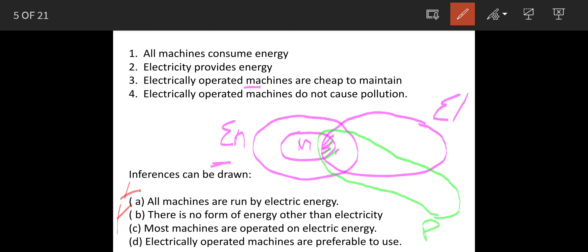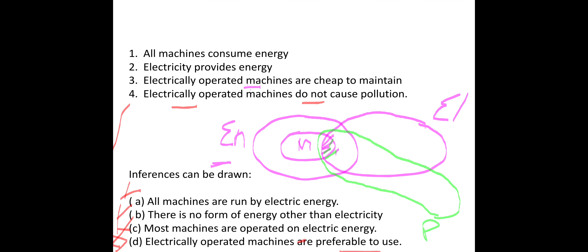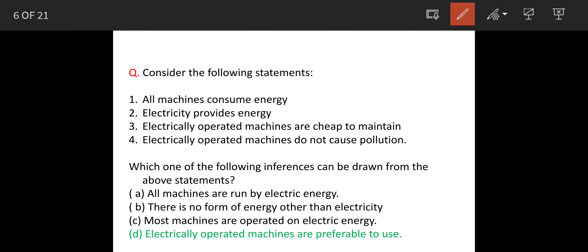Most machines are operated on electrical energy - we can't say this. Now the last one is electrically operated machines are preferable to use. Now electrically operated machines do not cause pollution, so because of this we can draw the inference D. So our answer is option D here.